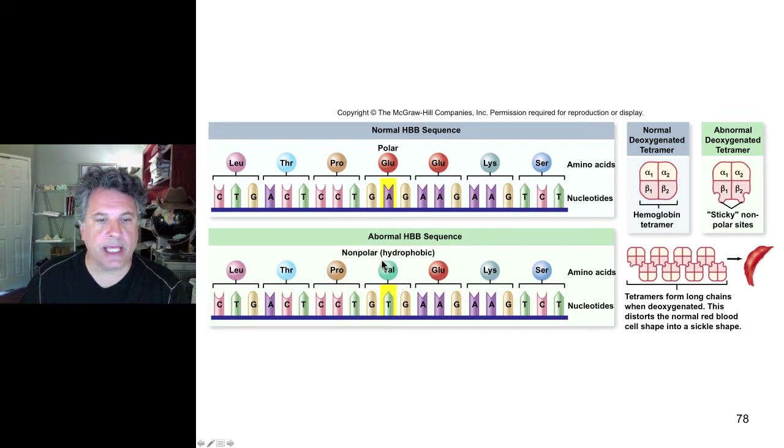Valine, as you may remember, is a hydrophobic amino acid, whereas glutamate, glutamic acid, is a polar charged amino acid. That glutamate resides on the surface of the beta globin protein.